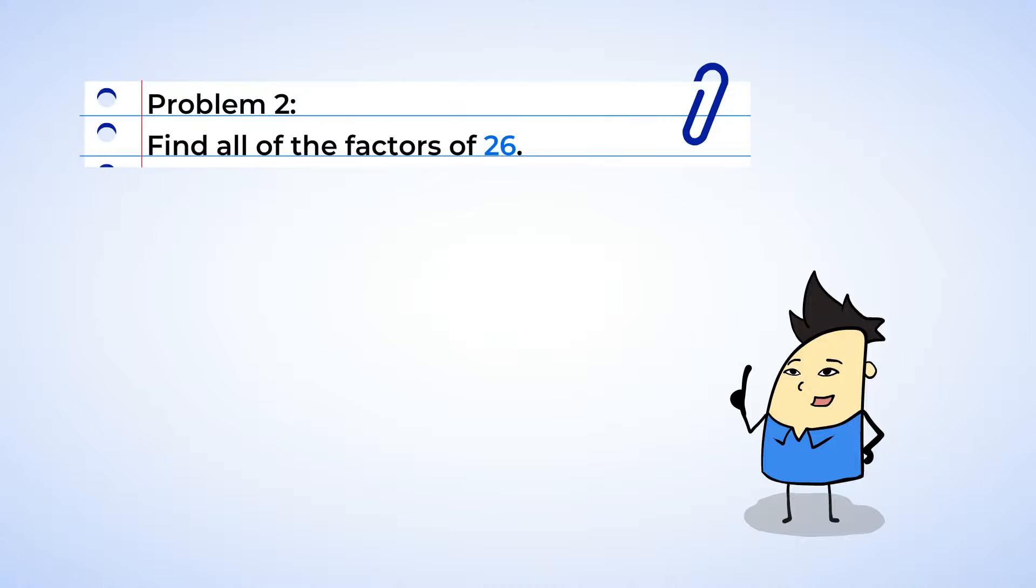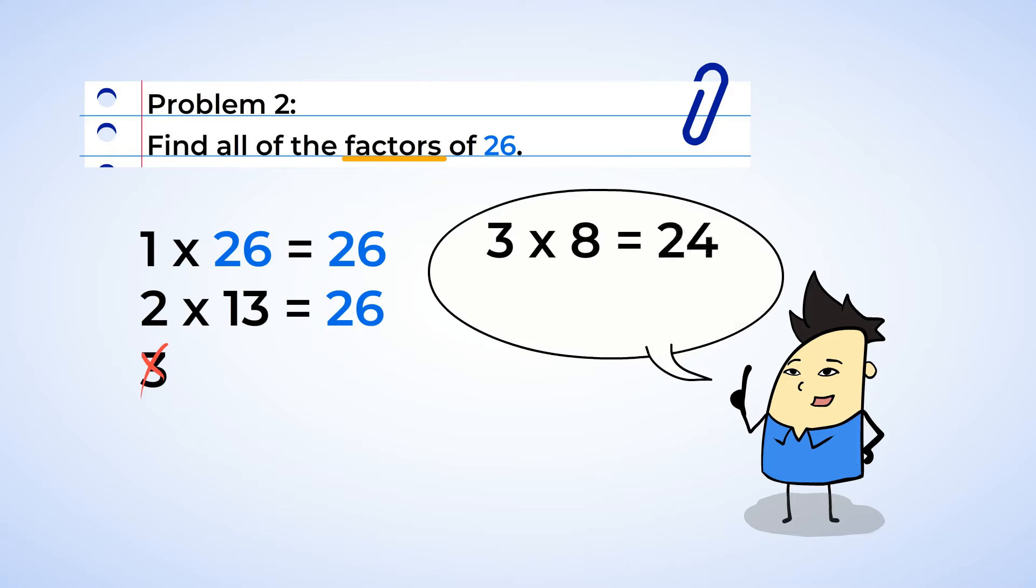Alright, so we need to find all of the factors of 26. Okay, we can do this. Let's start with 1. 1 multiplied by 26 is 26. Good. Next, we can check 2. 2 multiplied by 13 is also 26. Now we can move on to 3. No, 3 is not a factor because 3 times 8 is 24 and 3 times 9 is 27. Okay, let's try 4. No, not 4 because 4 times 6 is 24 and 4 times 7 is 28. Wow, as we continue to go through the numbers after 2, there are no other factors until we get all the way up to 13. Okay, so the factors of 26 are 1, 2, 13, and 26.